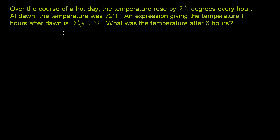Over the course of a hot day, the temperature rose by 2¼ degrees every hour. At dawn, the temperature was 72 degrees. An expression giving the temperature T hours after dawn is 2¼T plus 72. What was the temperature after six hours?